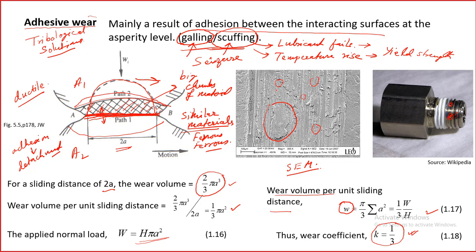In an IC engine, the piston and cylinder can experience seizure at extreme levels when the temperature goes high. Because of high temperature, the materials become soft and adhesion is higher — soft materials are more ductile. The contact area will also increase, and the whole process can lead to seizure of the two surfaces — they completely adhere to each other. That is the worst case of adhesive wear.